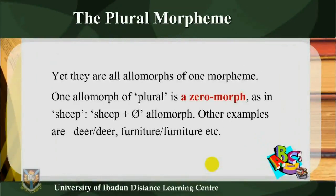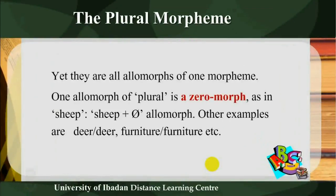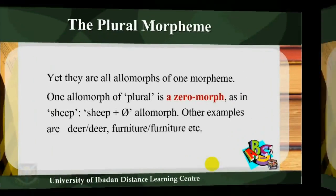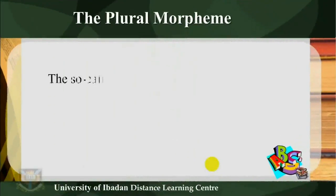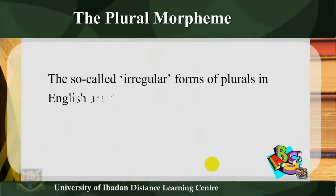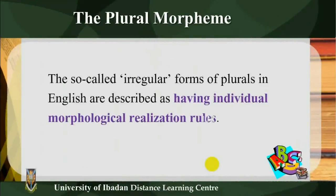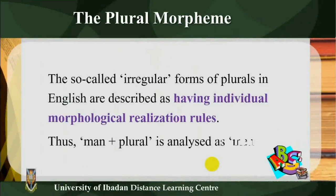Sheep plus zeromorph allomorph. Other examples are deer, furniture, et cetera. The so-called irregular forms of plurals in English are described as having individual morphological realization rules. Thus, man plus plural is analyzed as men.